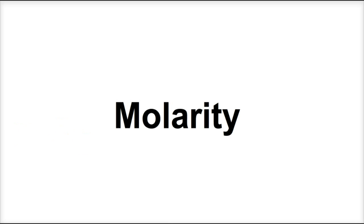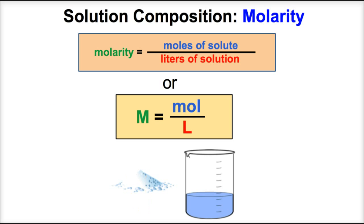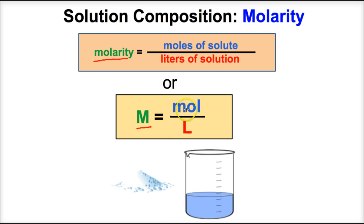So let's take a look at molarity and see how we can apply it to several different problems. The molarity of a solution is equal to the moles of dissolved solute divided by the total liters of solution. Capital M stands for molarity, and it equals moles of solute divided by liters of solution — or simply put, molarity equals moles per liter.